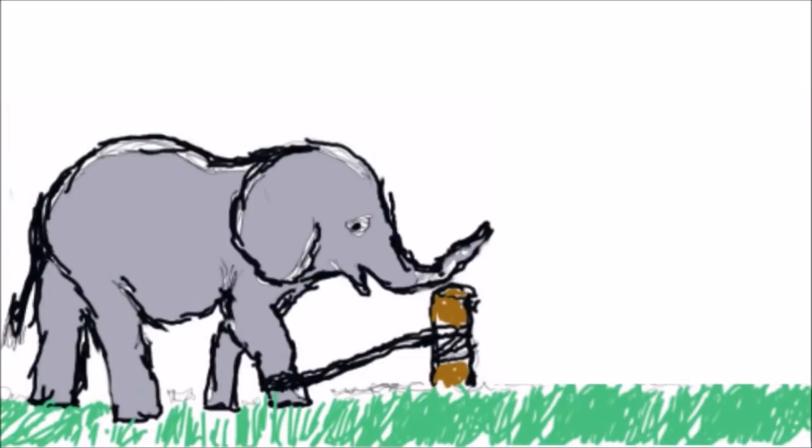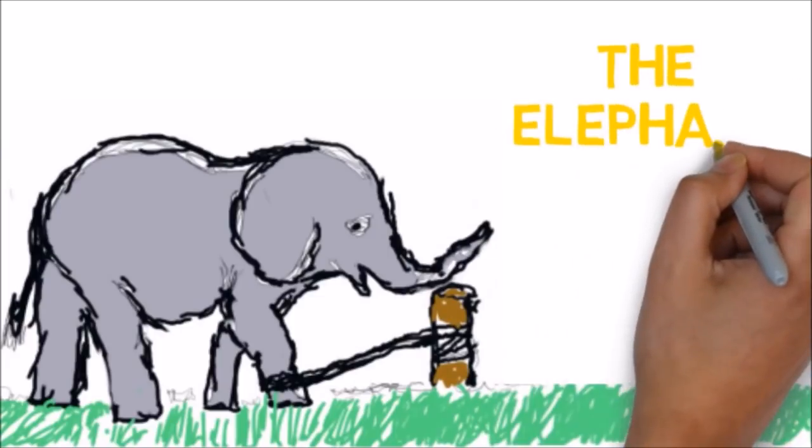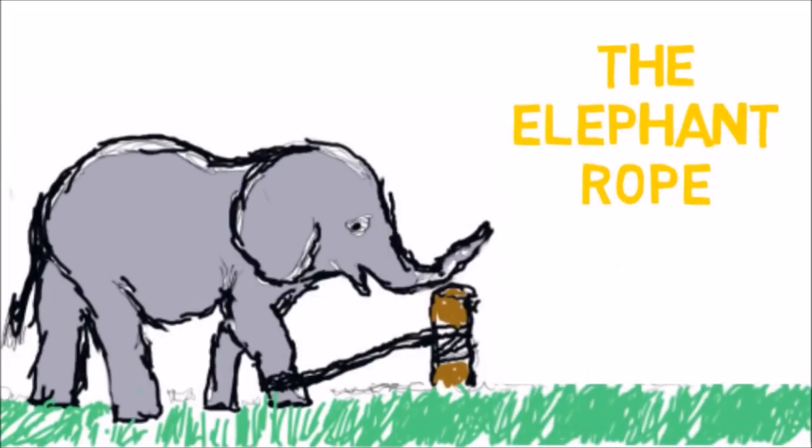As a man was passing the elephants, he suddenly stopped, confused by the fact that these huge creatures were being held by only a small rope tied to their leg. No chains, no cages.